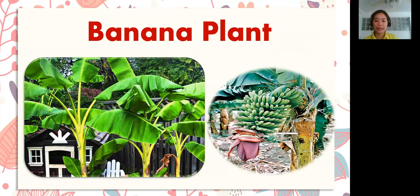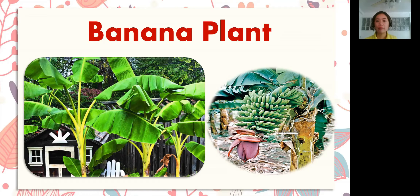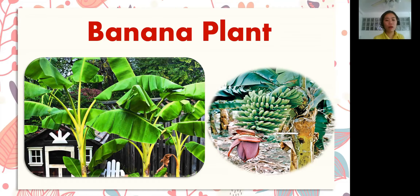Banana plant. Again: banana plant. Look at the picture — you can see banana plant. Let's spell the words. Ready? Go! B-A-N-A-N-A-P-L-A-N-T. Great job! Banana plant is an example of monocotyledon.